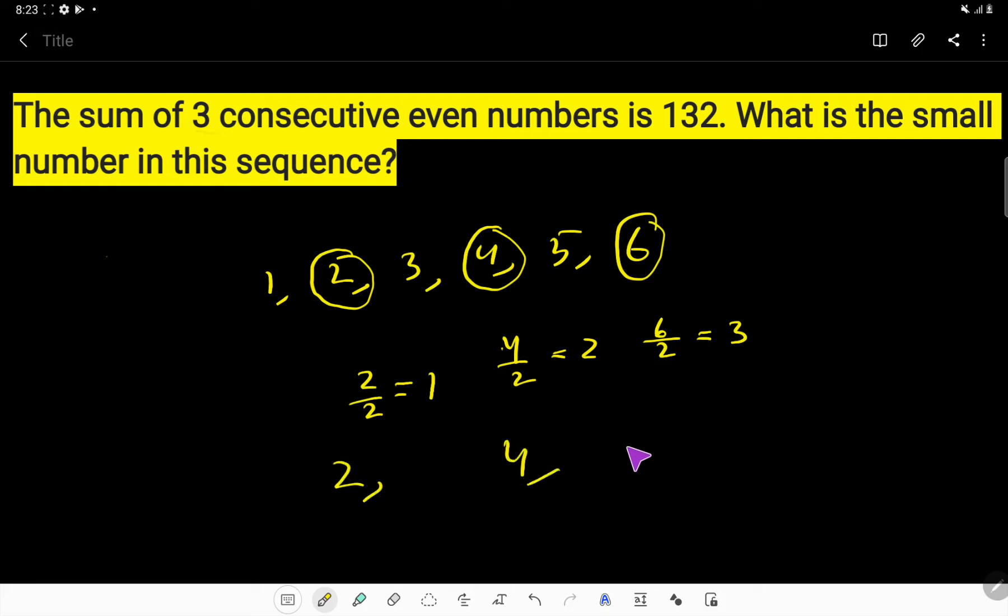Two, four, six - these are the even numbers. You can say these are the consecutive even numbers. The difference between two and four is two, and six and four is two. The difference between consecutive even numbers is always two.